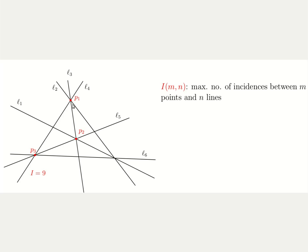We'd like to see what is the maximum possible number of incidences between n points and n lines. The main theorem here is the Szemeredi-Trotter theorem that says the maximum possible number of incidences between n points and n lines is bounded by this expression.